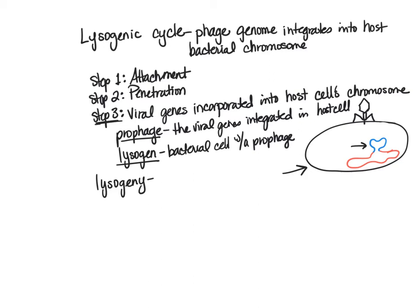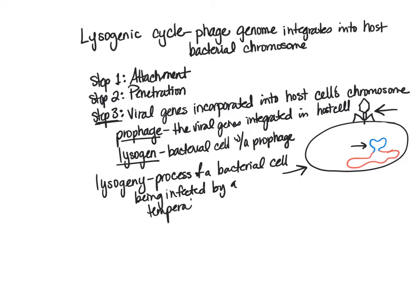Lysogeny is the process of a bacterial cell being infected by a temperate phage — the process of the bacteriophage integrating its chromosome into the bacterial chromosome. To clarify: when we say prophage, we're referring to the viral genes integrated in the host cell; when we say lysogen, we're referring to the bacteria itself that contains a prophage.